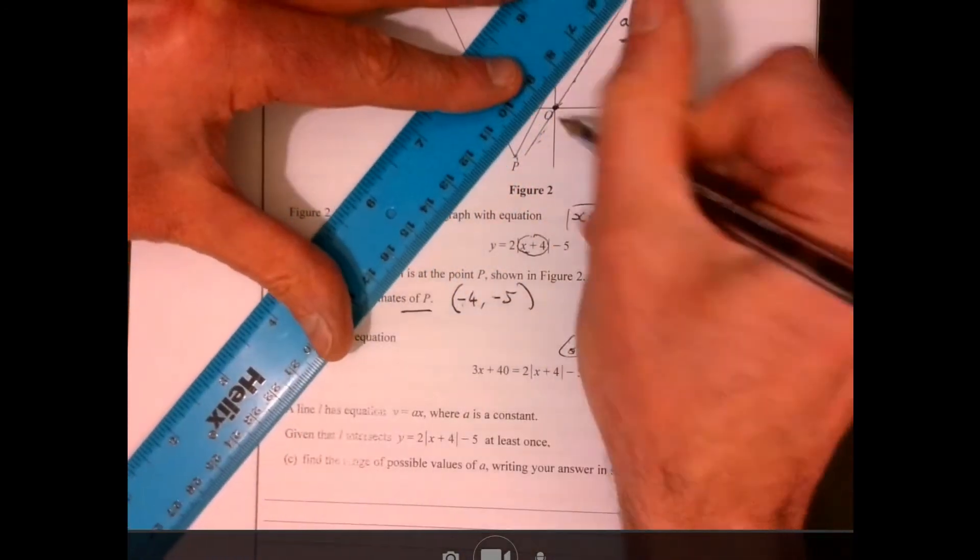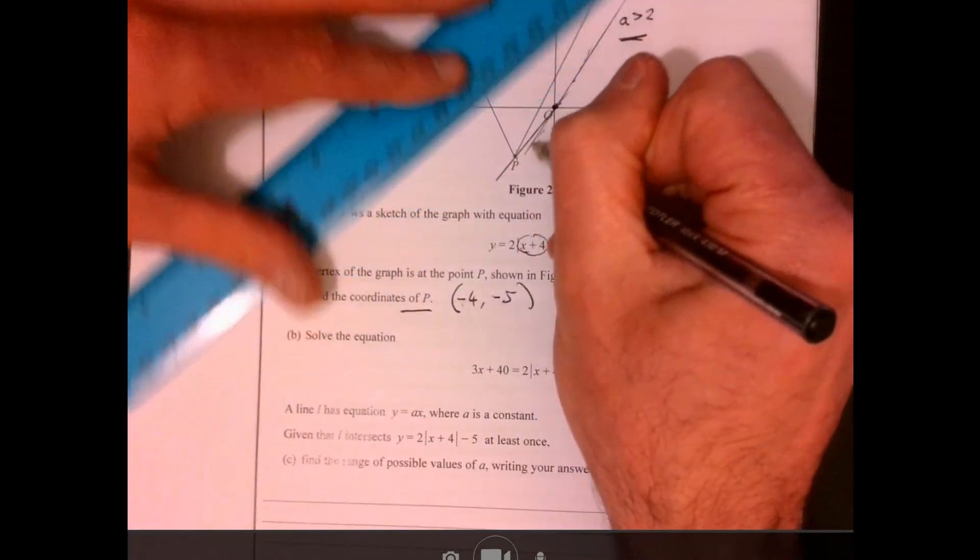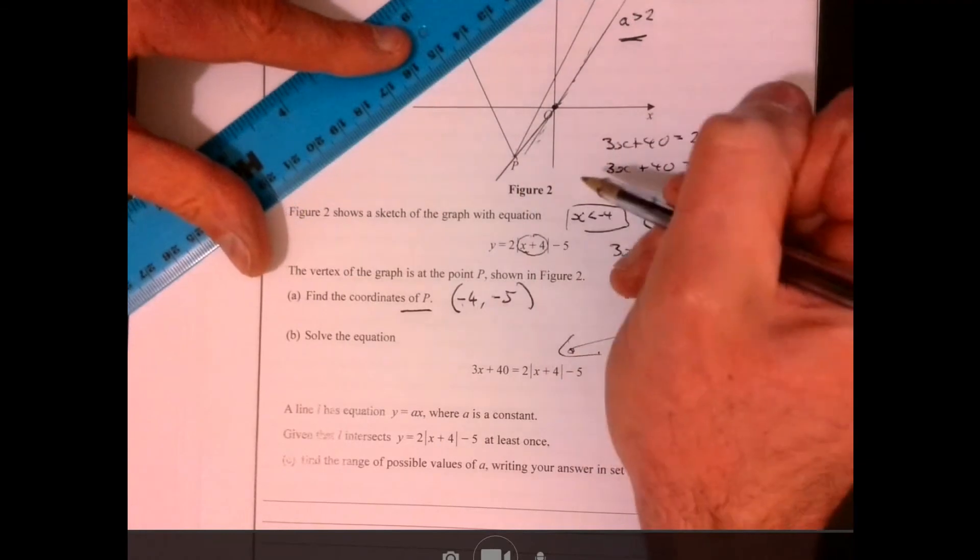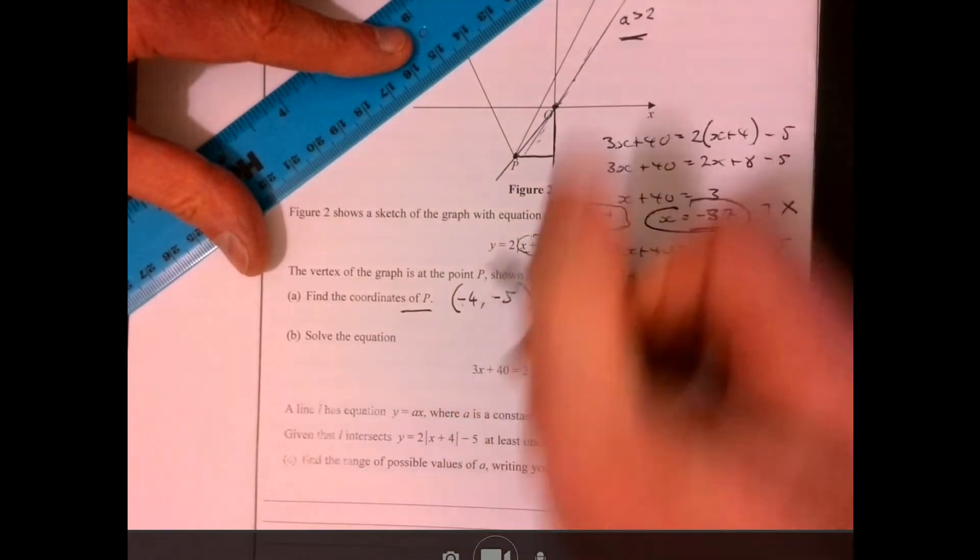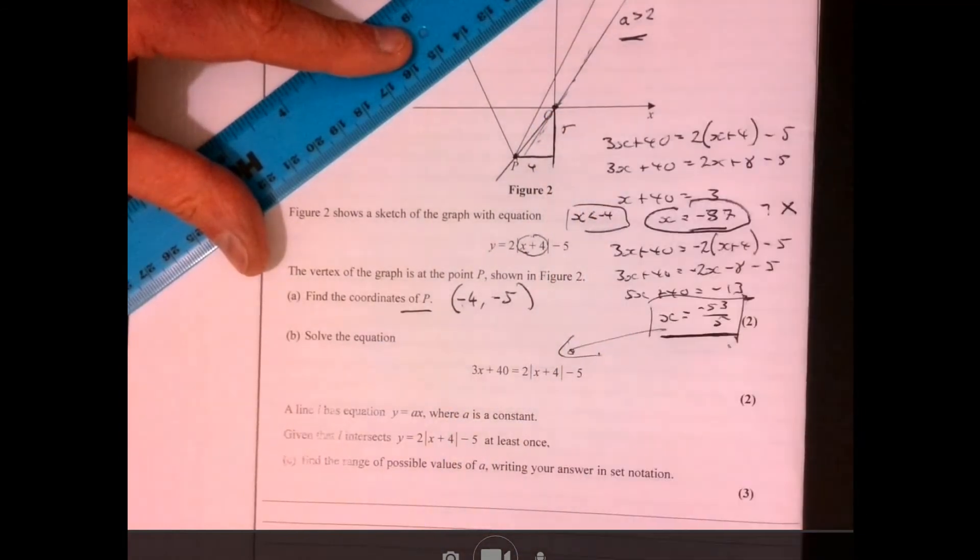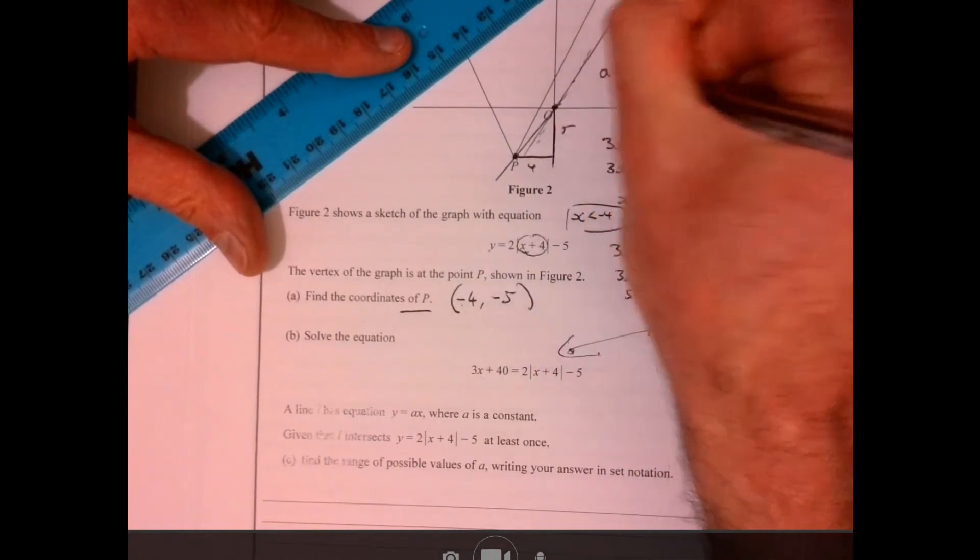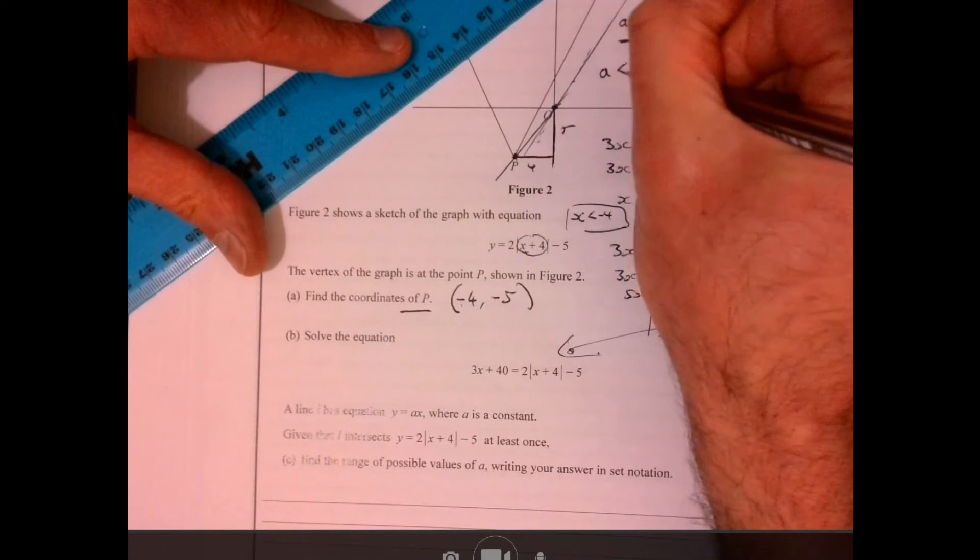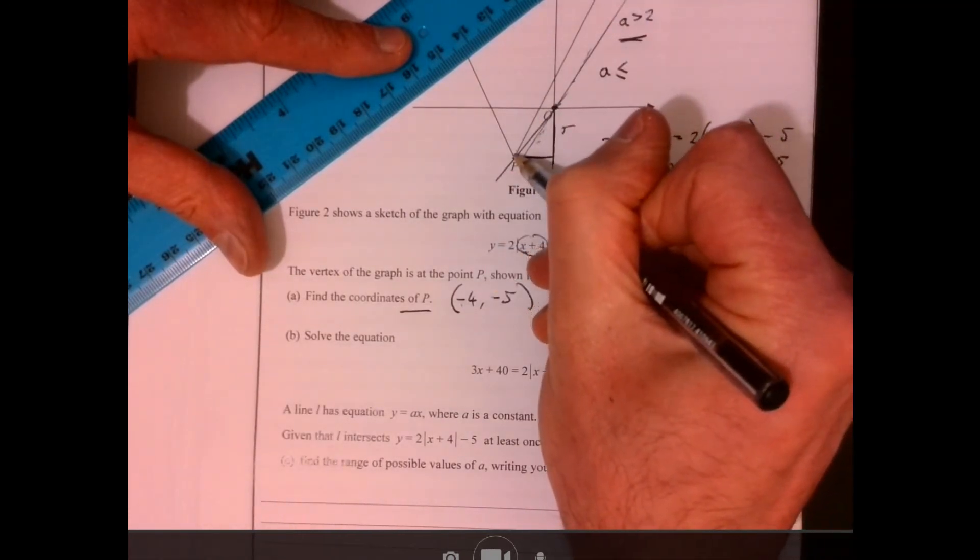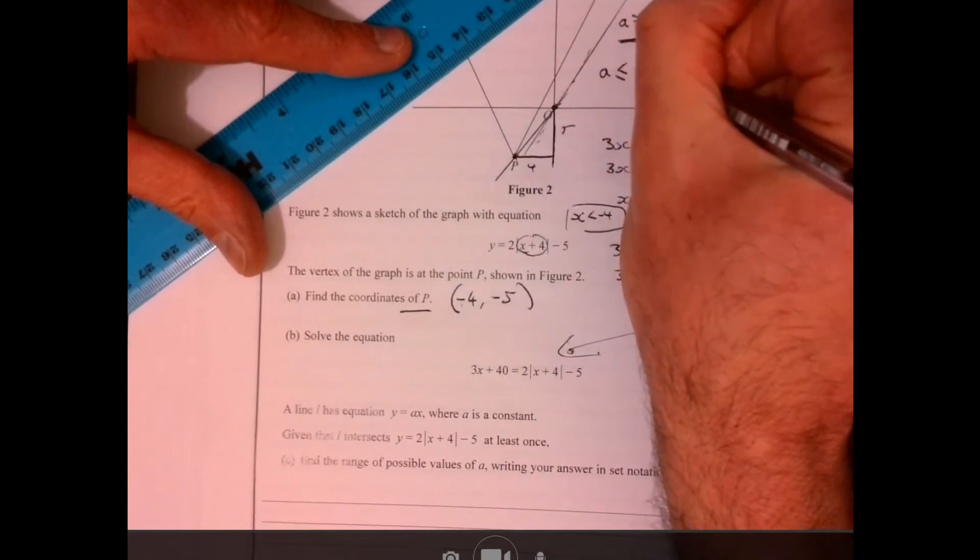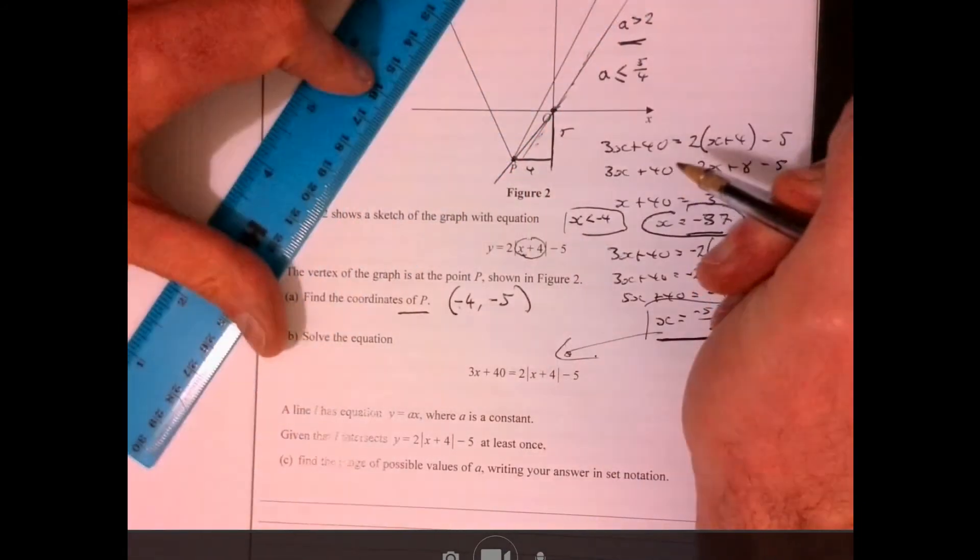Now the other way it could cross over is if it hits in this point down here. So once it kind of goes past this point here, so how does it hit that point? Well, we know minus 4, so that's 4, that's 5. So the gradient here is 5 over 4. So a would also need to be less than or equal to, because if it's equal to, then it means it would intercept this point here, 5 over 4. Because that would make that gradient just there.